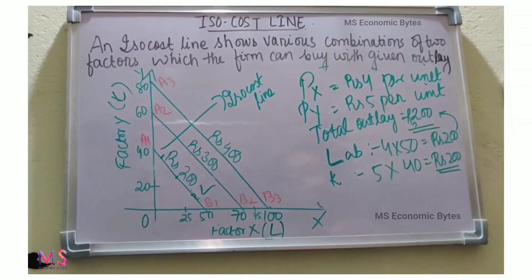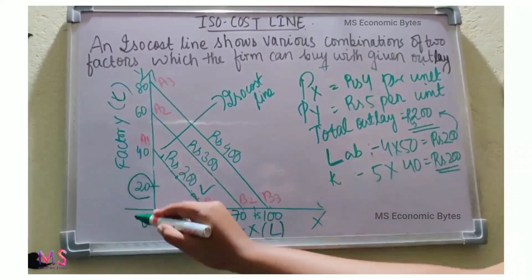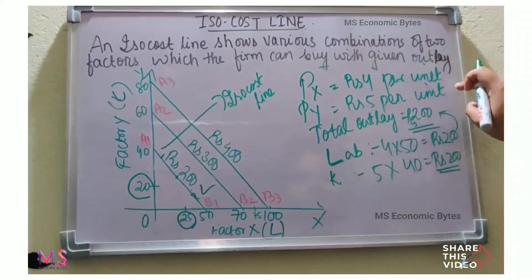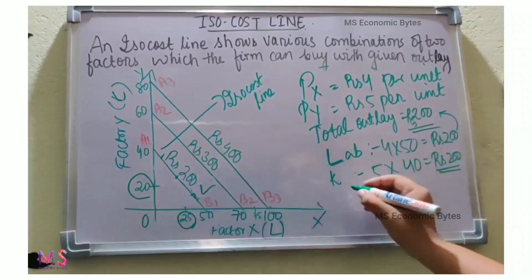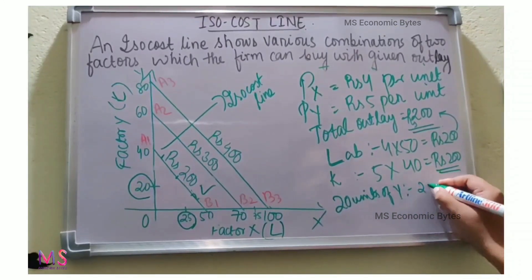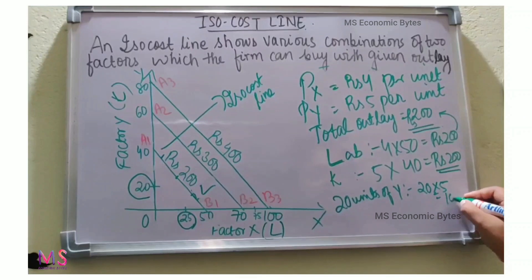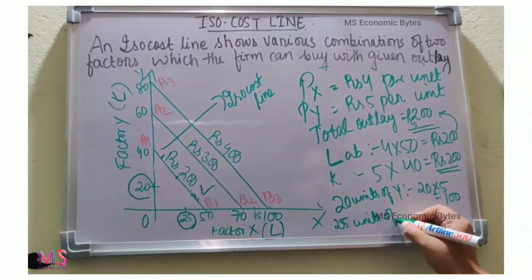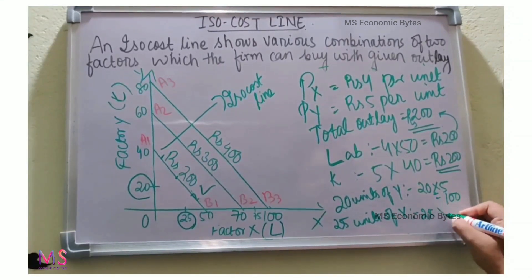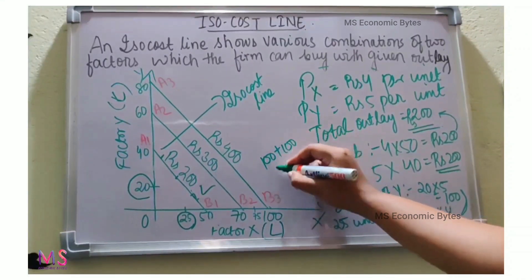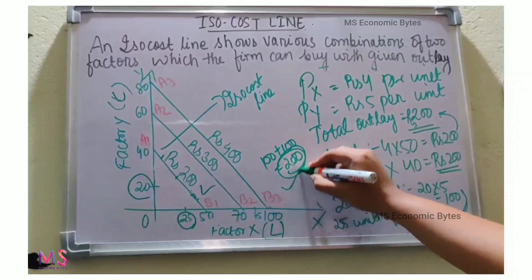Suppose the firm buys 20 units of Y and 25 units of X at the given prices per unit. For 20 units of Y, it spends 20 × 5 = ₹100, and for 25 units of X, it spends 25 × 4 = ₹100. Adding these two: 100 + 100 = ₹200, which is again the total outlay of the firm.